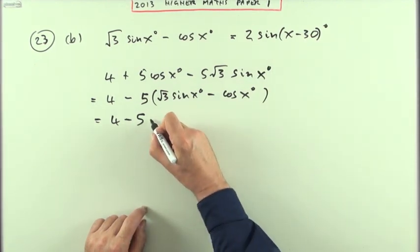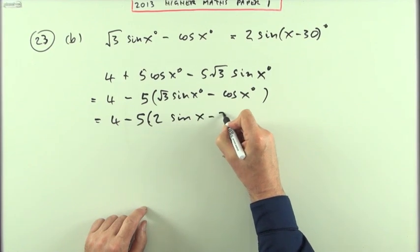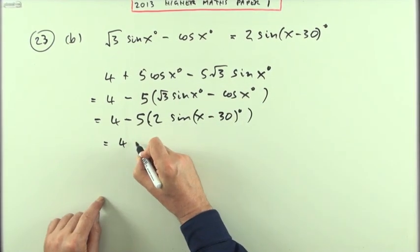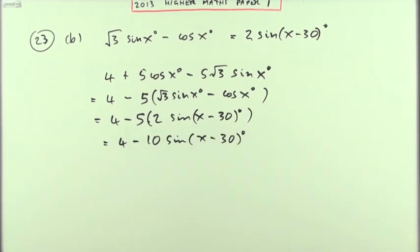Now that I've identified part a within part b, I can replace this with the part you had before. So it's 5 times 2 sine of x minus 30 degrees. So that means it comes to 4 minus 10 sine of x minus 30 degrees.